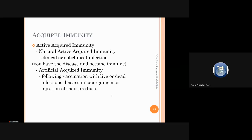In active acquired immunity, the term 'active' does not mean it occurs very fast — it means your immune system is taking an active part in building the immunity. In this type of immunity, when the body is exposed to any type of antigen or microbe, the host will produce its own antibody.